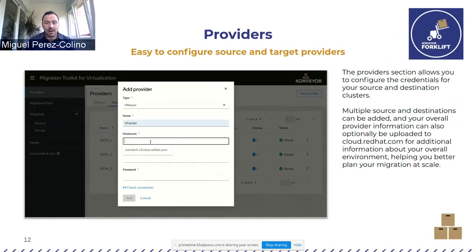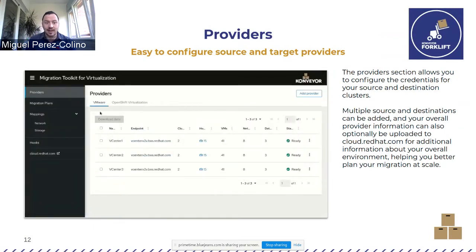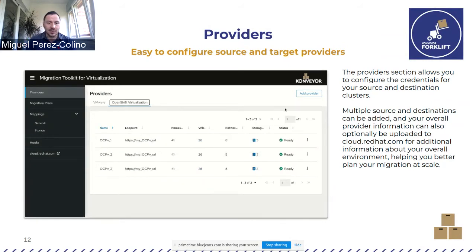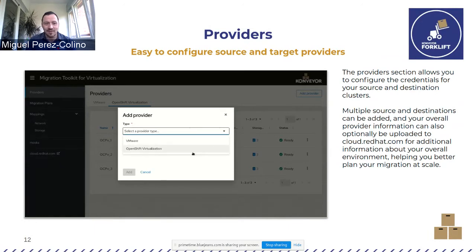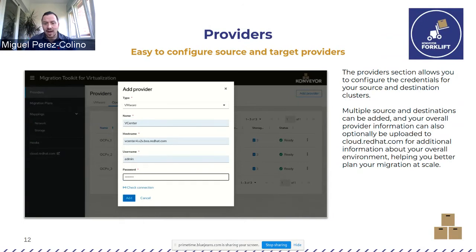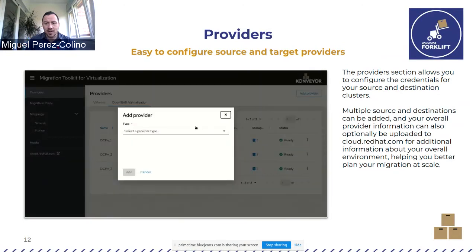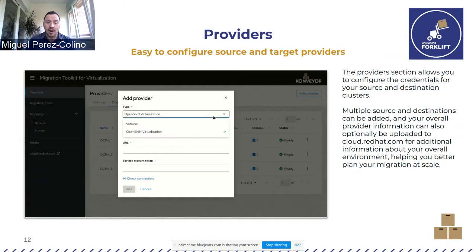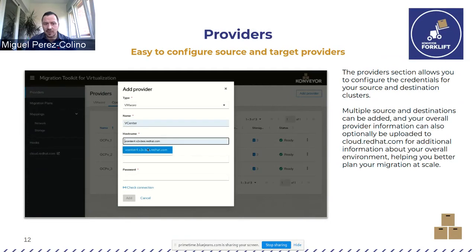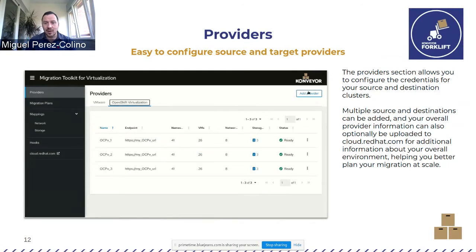The first step is to connect to a provider — there are two kinds: source and target. Currently the source is VMware and the target is OpenShift Virtualization. When you install Forklift on KubeVirt, it automatically configures the target. You provide the vCenter hostname and credentials, and Forklift will connect, reveal the hosts, VMs, networks, and storage domains managed by that vCenter, perform checks, and let you know when it's ready.